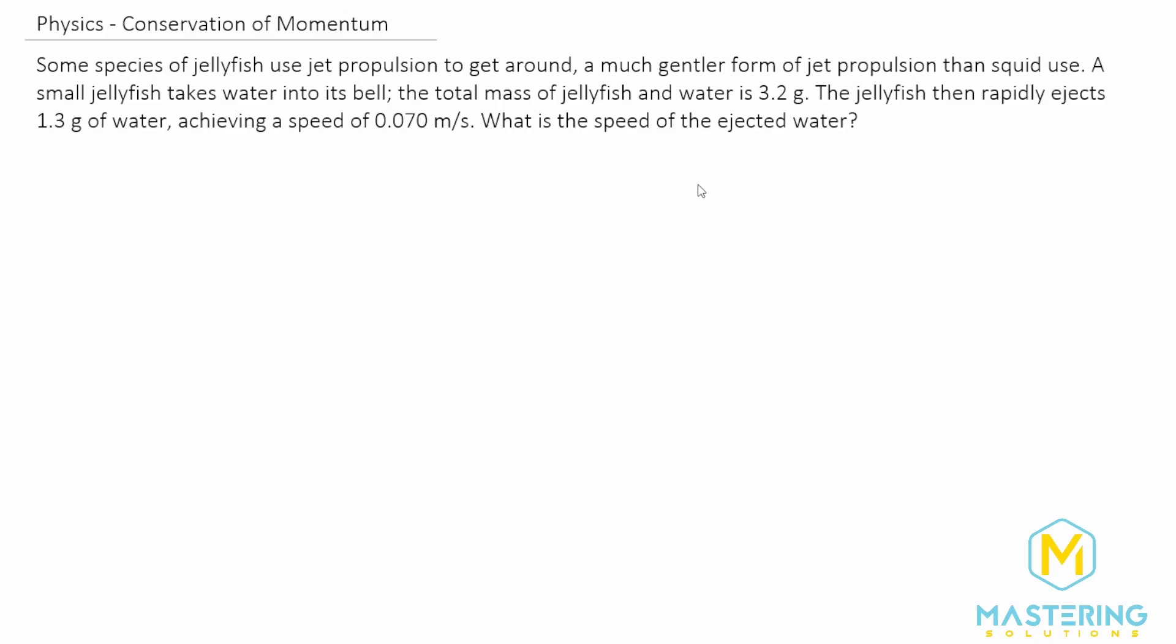So let's quickly draw a little jellyfish here to give us an idea of what's going on. All right, so we have our little jellyfish friend, and it says that the total mass of the jellyfish and the water together is equal to 3.2 grams. We of course need to change that into SI units. So for grams to kilograms, we can move the decimal place over 3. So 1, 2, 3 gives us 0.0032 kilograms.